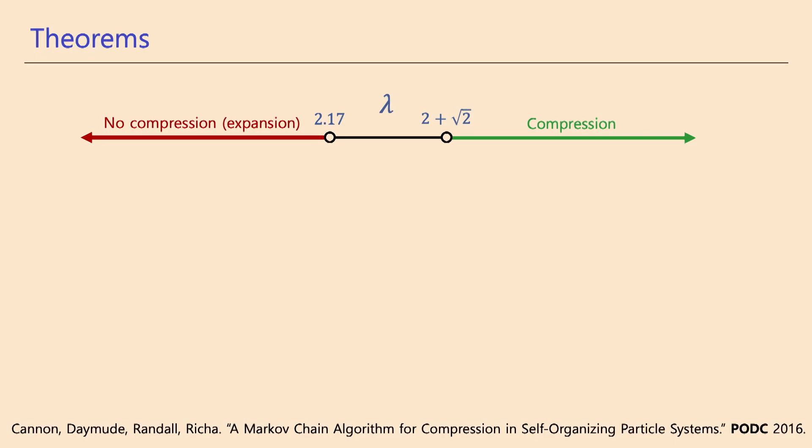What we're able to show is that if lambda is less than 2.17, you get expansion. You get something which provably has linear perimeter, and when it's greater than about 3.5, you get compression.